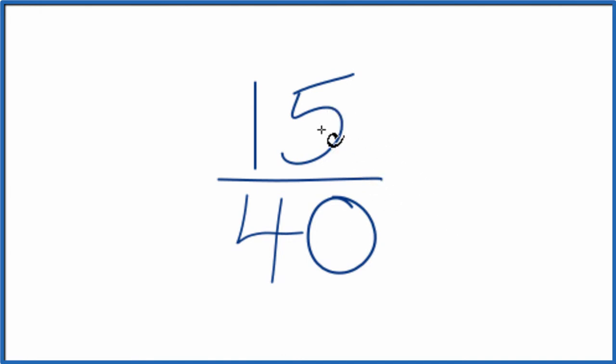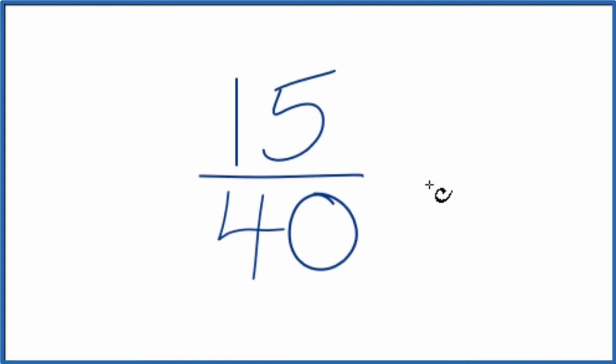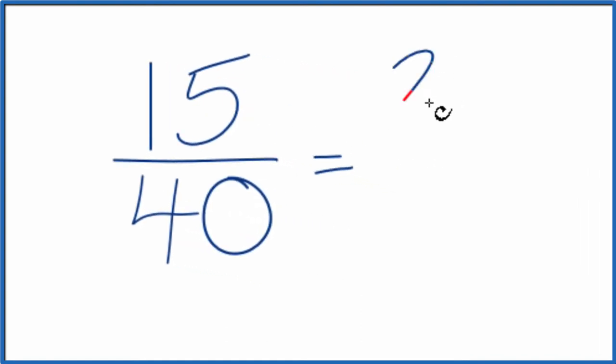I know that 5 will go into 15 and 40 evenly, so let's divide 15 by 5. 15 divided by 5 gives us 3, and 40 divided by 5 gives us 8.